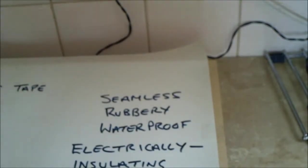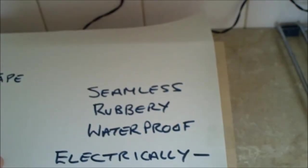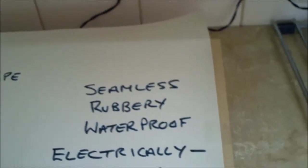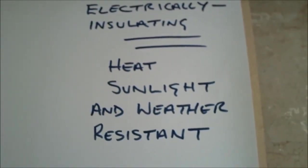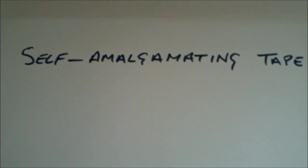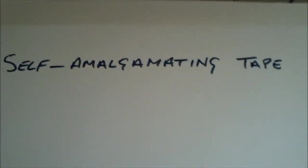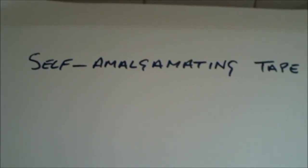This self-amalgamating tape, you can go online, go on wiki or whatever. It's seamless, it's wobbly, it's waterproof, it's electrically insulating, it's heat, sunlight, and weather resistant. And if you want to write it down, there it is: self-amalgamating tape. I think you can get it on eBay as well. It's not cheap, about three or four pounds or something like that, but you can see how good it is. Anyway, I hope this has helped you lads out there. Sorry, the lads and the lasses, better be politically correct. I hope it's helped and I'll see you soon. Take care, bye for now.